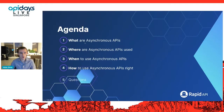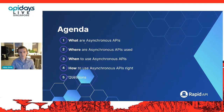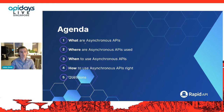As far as the agenda goes for today's conversation, five things I'm going to go through fairly quickly: first, the definition of what asynchronous APIs are; then where and when they should be used versus other types of APIs; a couple of best practices from our experience; and then questions.